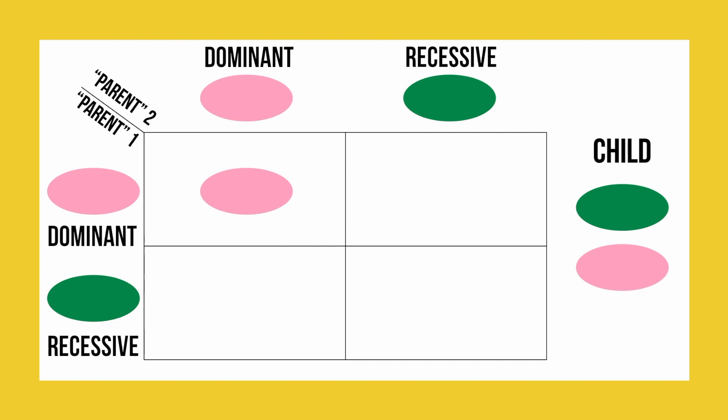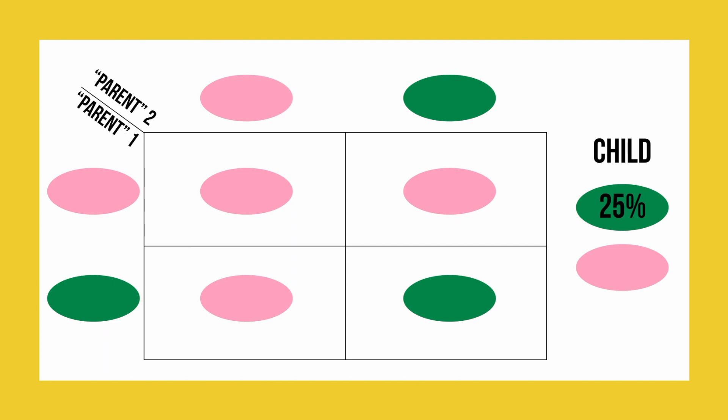In the next square over, you have the combination of pink from one parent and green from the other, resulting in a pink child. We then repeated this process to fill out the rest of our chart. As you can see, there are three squares with pink genes showing up, and only one square with a green gene. So we can say that the child has a 25% chance of getting the green gene, and a 75% chance of getting the pink gene.